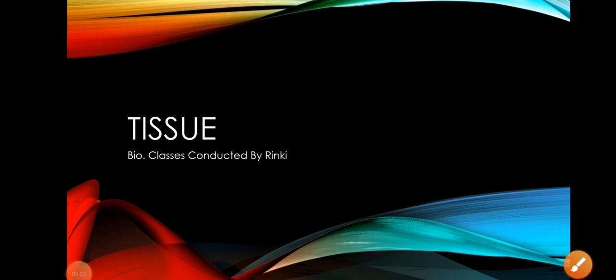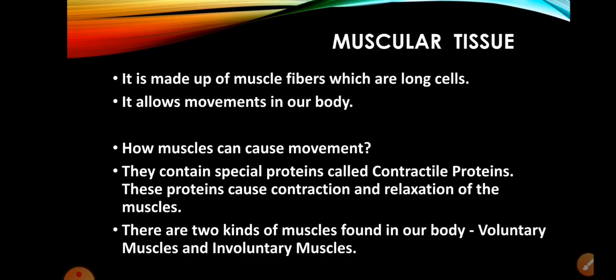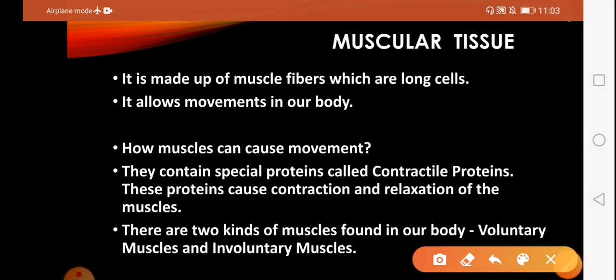Good morning students, it's your biology class and today we will discuss the fourth part of tissues, in which we will be discussing muscular tissue. Previously we already discussed epithelial and connective tissue. So let's start the topic. Muscular tissue is made up of muscle fibers, which are long cells.